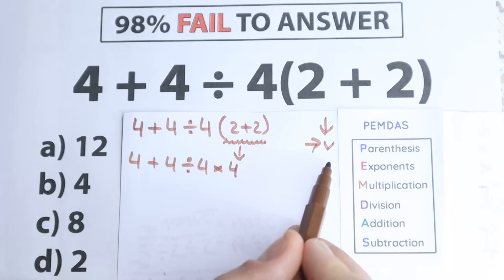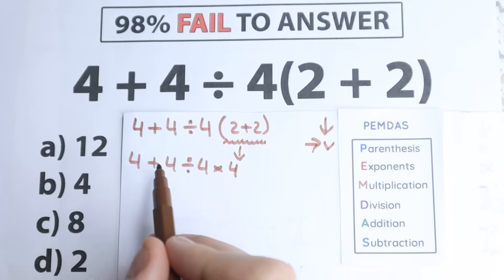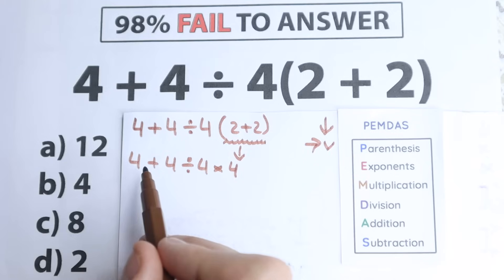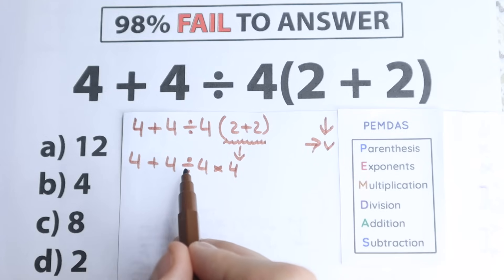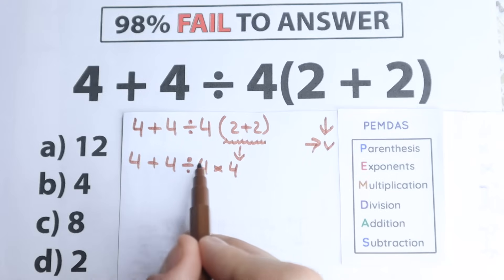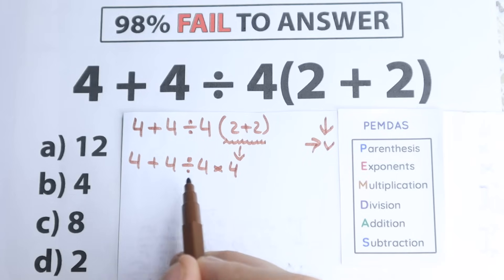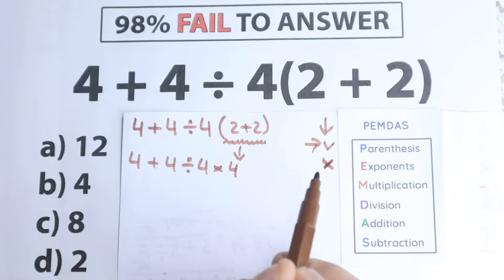The next step is Exponents. We need to look and see if we have any exponents — squares, cubes. Let's look at it. No, I don't see any of those. We don't have any powers right here, so we just skip this part. We don't have any exponents.